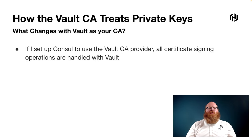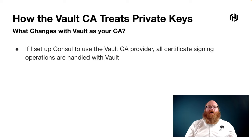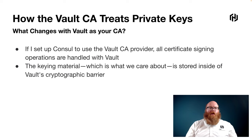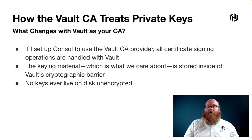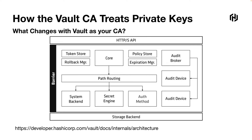We looked through the Consul Raft storage. So what changes when we use Vault as your certificate authority in Consul? If I set up Consul to use the Vault CA provider, all certificate signing operations are handled by Vault. And the keying material — that private key — is stored inside of Vault's cryptographic barrier. Here's a diagram from the Vault documentation that talks about this cryptographic barrier. All of the data that leaves this cryptographic barrier and goes to a storage backend — no matter what storage backend you're using in Vault — is encrypted. Anything that is persisted in persistent storage is encrypted.